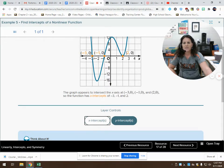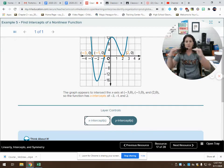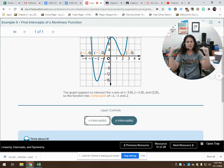An x intercept is simply wherever my line crosses the x axis. So I have one here at negative three. I have one here at negative one. I have here one at two, positive two. Those are my x intercepts, because it's where it crosses the x axis.